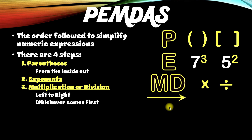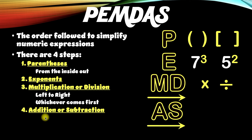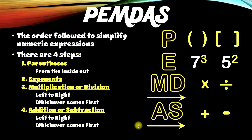Step four is kind of like step three. It's also shown using two letters — A and S — which stand for addition or subtraction. I also like to draw an arrow here because, like step three, this is done from left to right, whichever comes first. If you see addition first from left to right, then you do addition first. If you see subtraction first, then you do subtraction first.